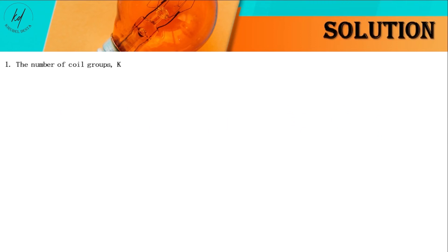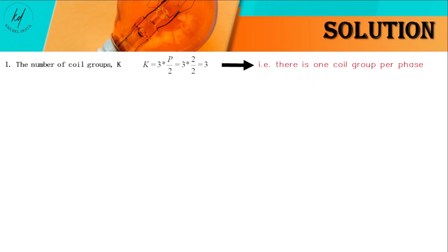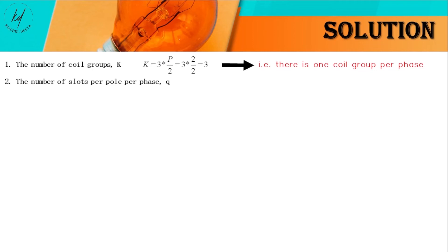First, the number of coil groups, represented by the letter K, which is equal to the number of poles divided by 2 and then multiplied by 3. This provides 3, meaning there is one coil group per phase.